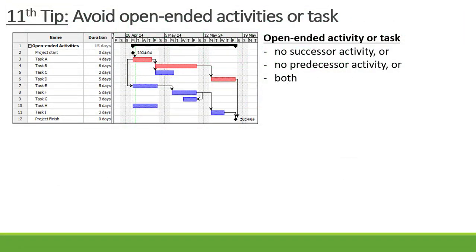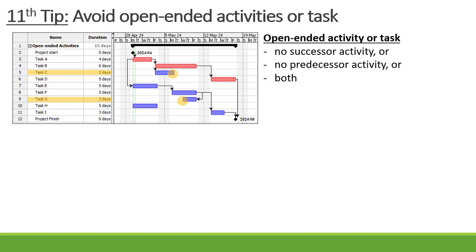The 11th tip is that you need to avoid open-ended activities in a project schedule. What is an open-ended activity? First of all, it can be an activity with no successor activity, like Task C. Task C doesn't have a successor activity. Or it can be an activity with no predecessor activity, like Task G.